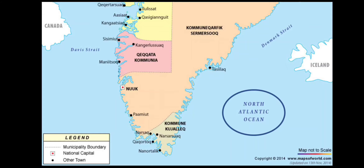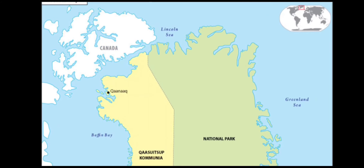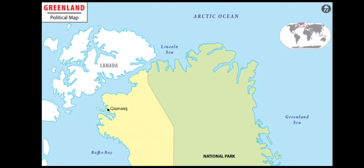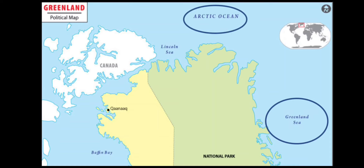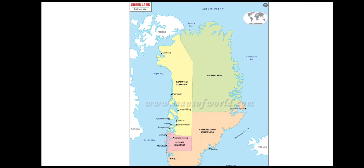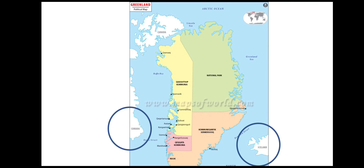The Atlantic Ocean borders Greenland's southeast portion. The Greenland Sea is to the east, the Arctic Ocean is to the north, and Baffin Bay is to the west. The nearest countries are Iceland and Canada. Greenland is the world's largest island and is the largest dependent territory by area in the world.